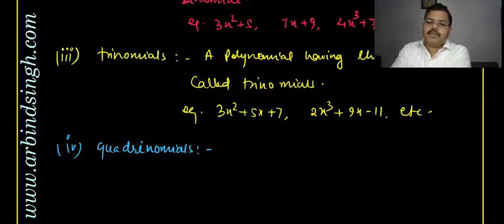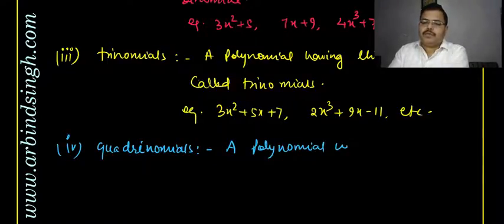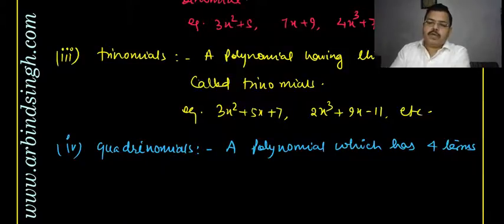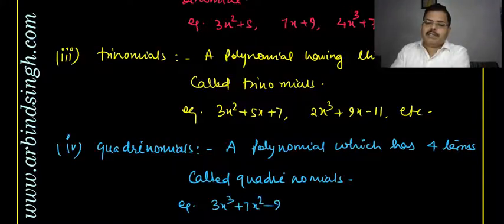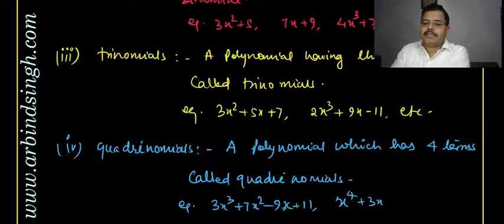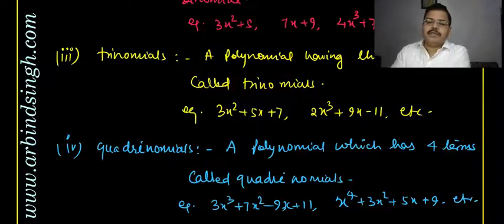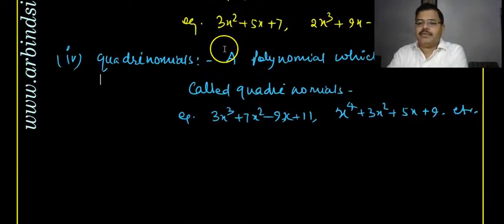The fourth type is quadrinomials — a polynomial which has four terms is called a quadrinomial. For example: 3x³ + 7x² − 9x + 11, or x⁴ + 3x² + 5x + 9. 'Quad' means four, so quadrinomials, trinomials, binomials, monomials — I hope you understood.